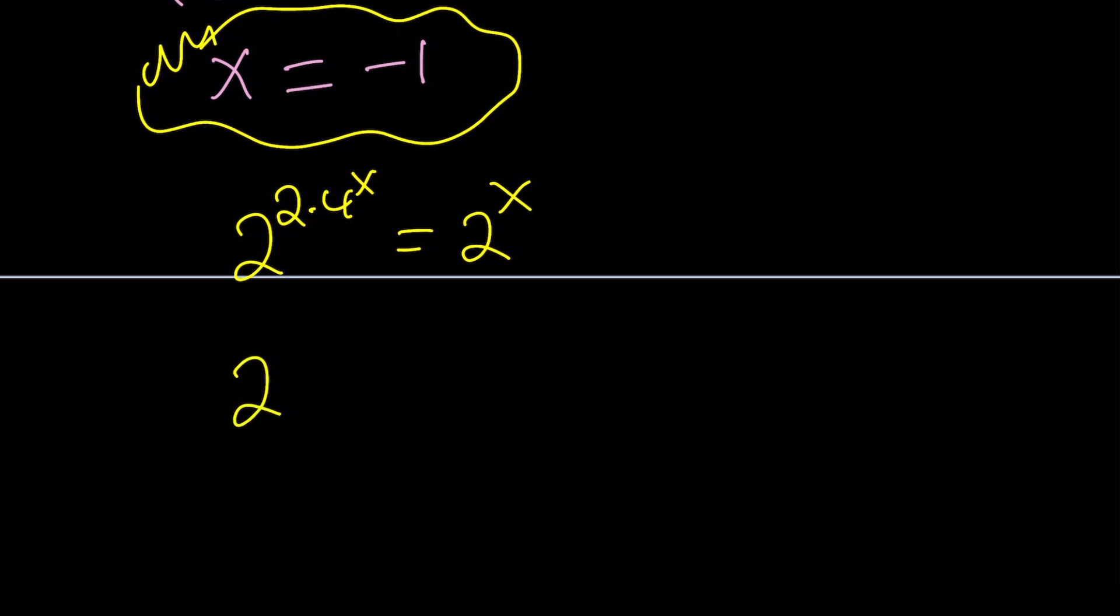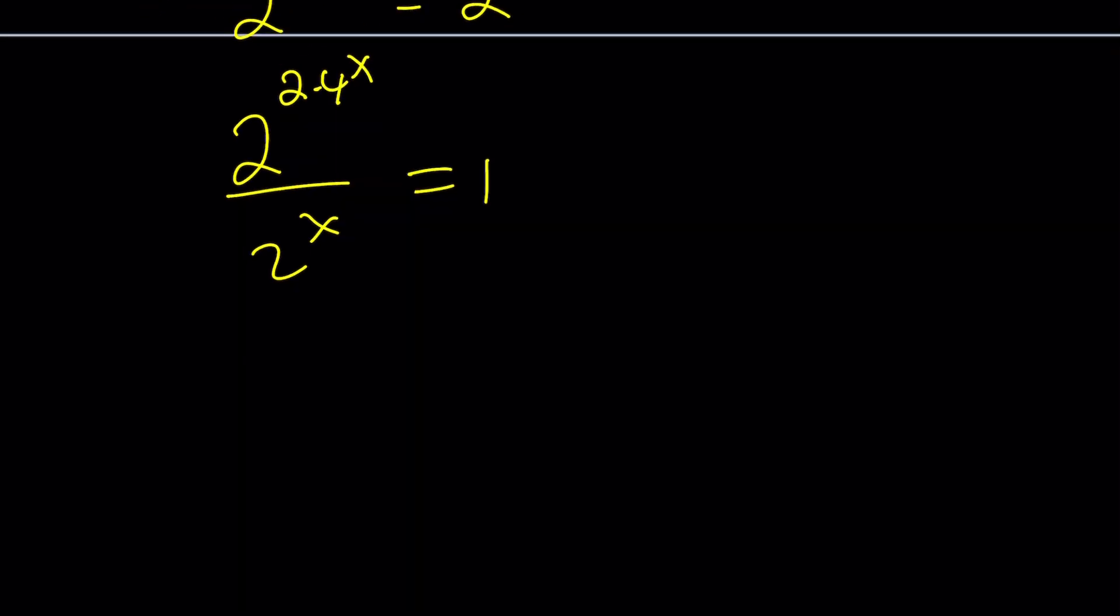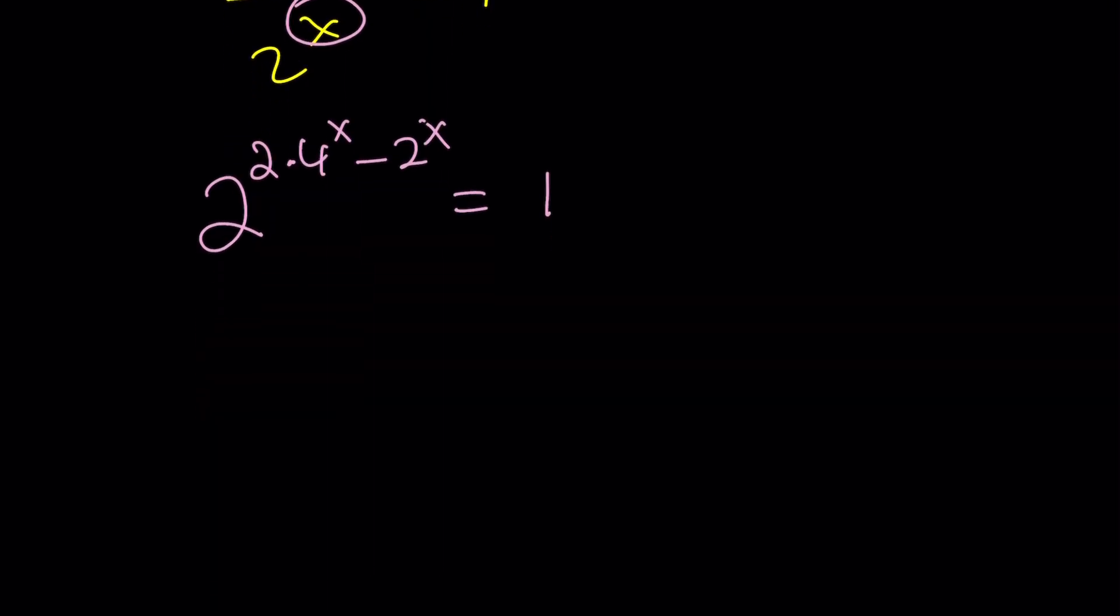We're going to divide by 2 to the x. That's going to give me 1, and I'll subtract the exponents. You get 2 to the power 2 times 4 to the x minus 2 to the x equals 1. Here's the critical part. If you do want to get the complex solutions, you're going to use Euler's formula and polar form.